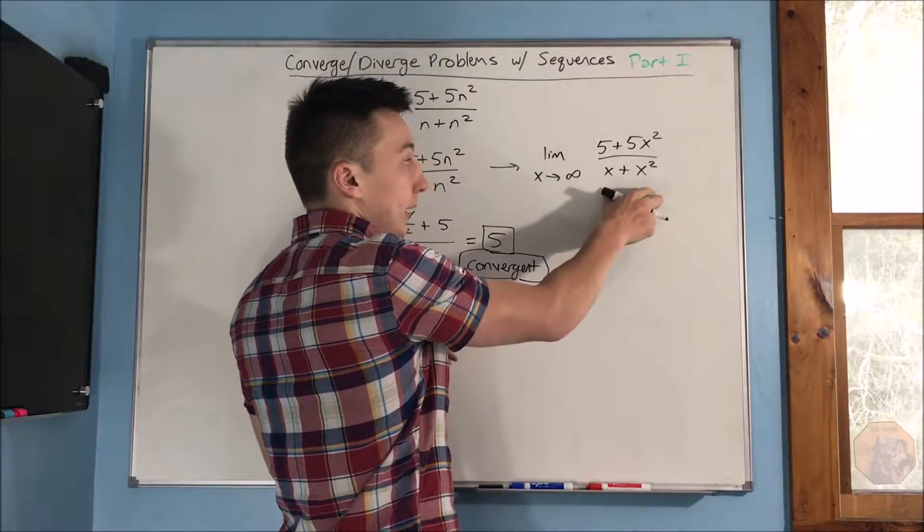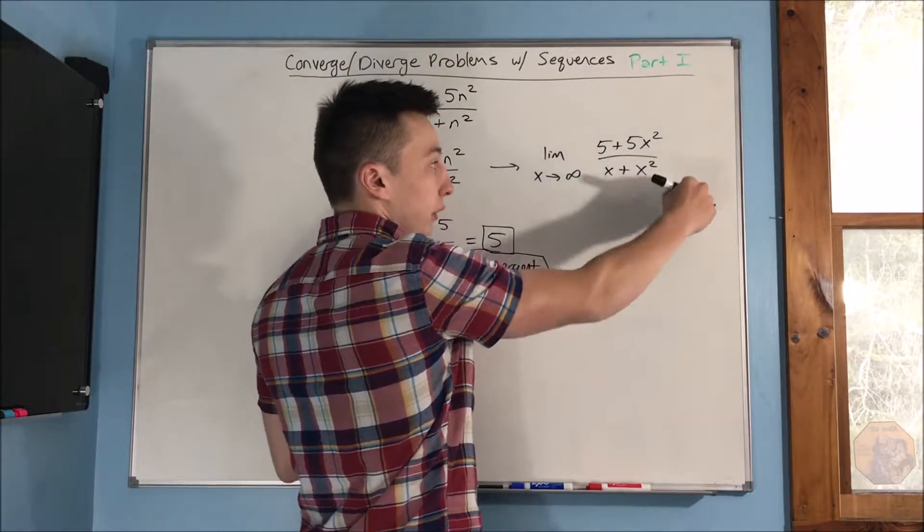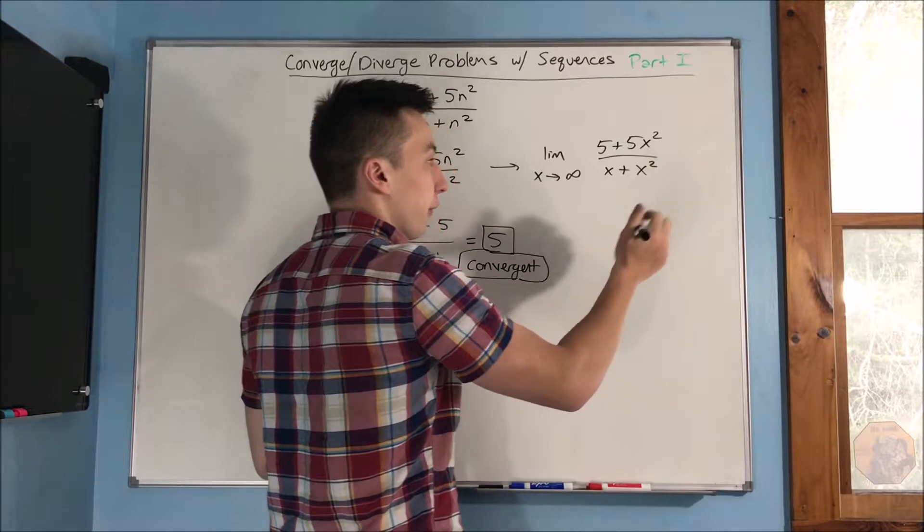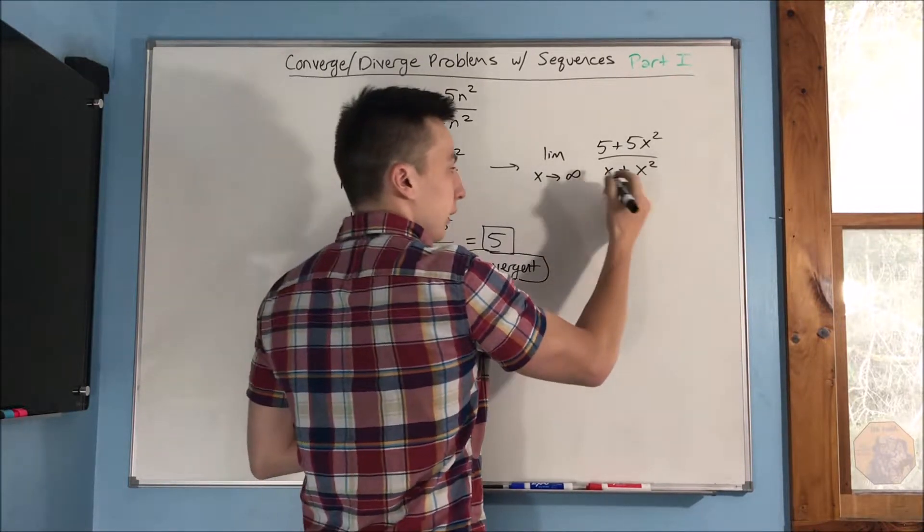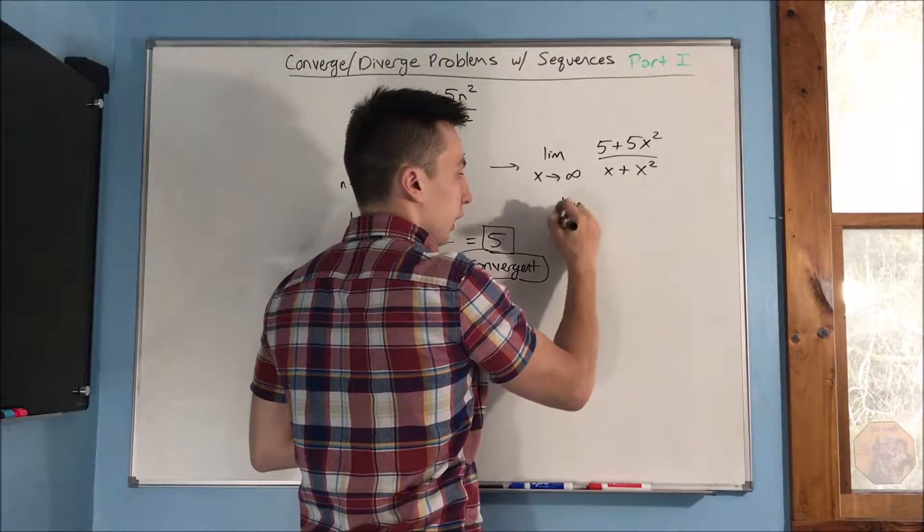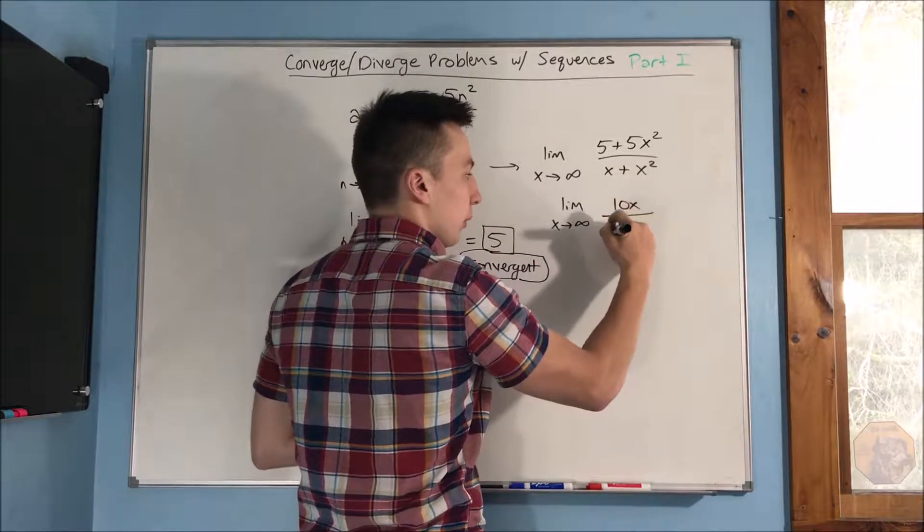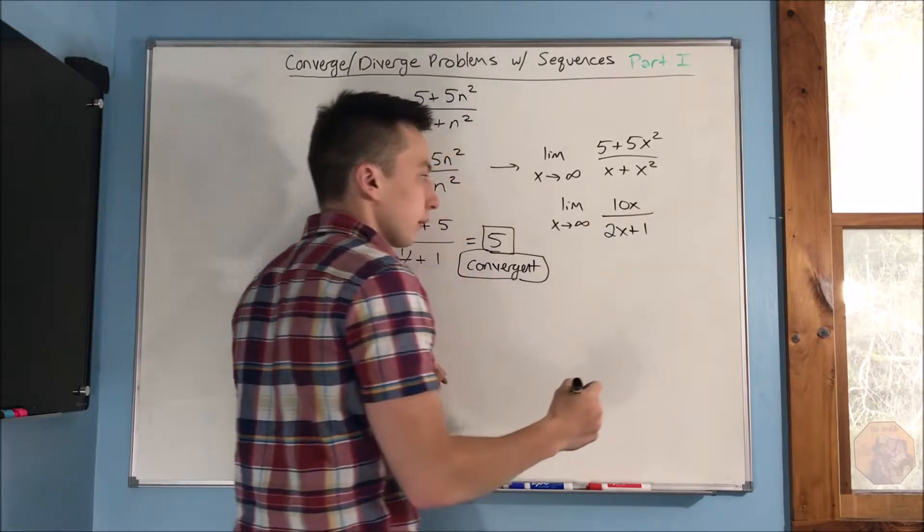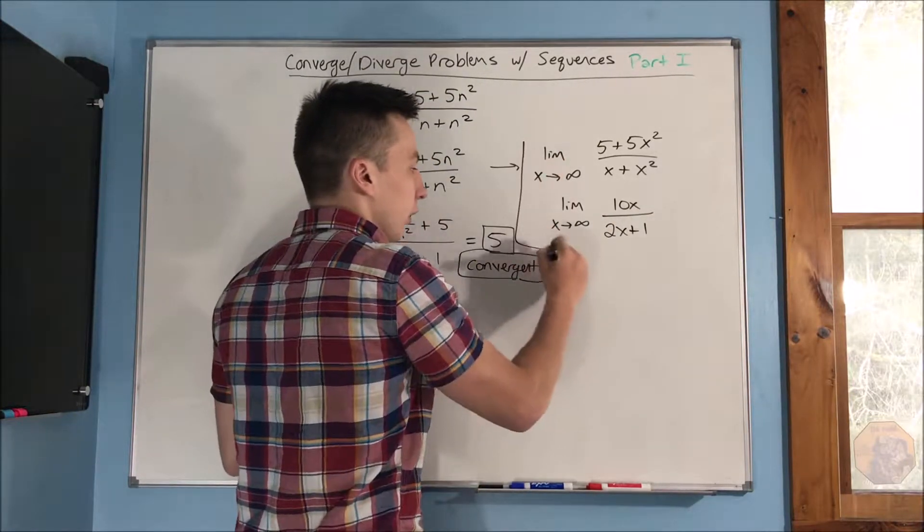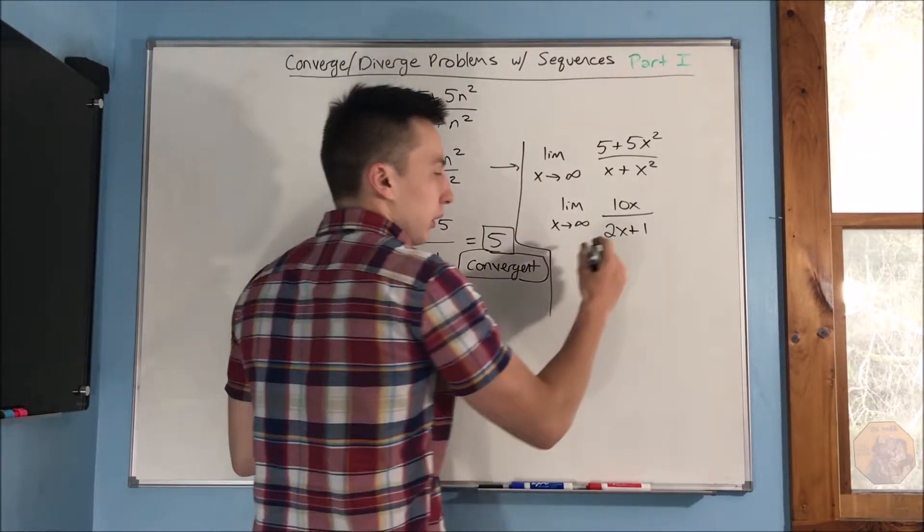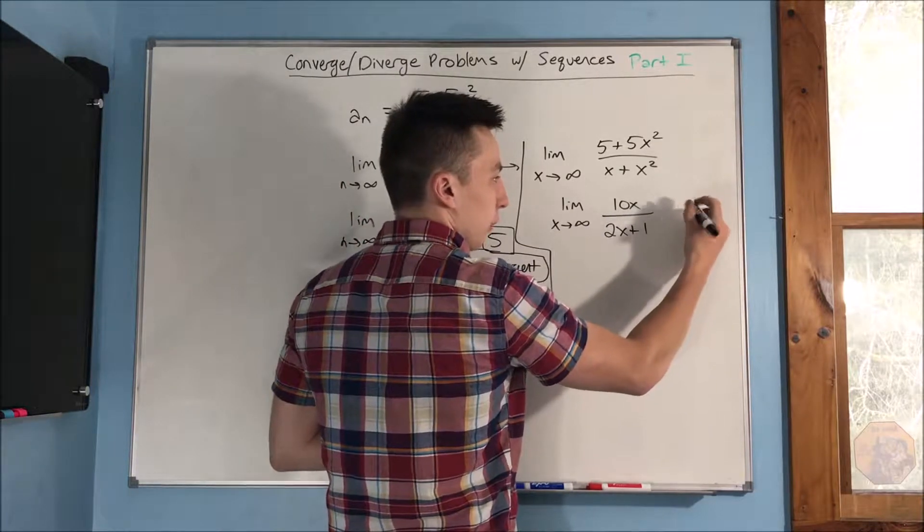Now, if we do do L'Hopital's, because we're going to get an infinity over infinity case here in indeterminate form, what we can do is, if we take, if we do a derivative of the top, we will get 10x, do a derivative of the bottom, and we'll get 2x plus 1. Again, we get an indeterminate form. This will still be infinity over infinity.